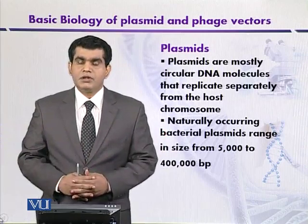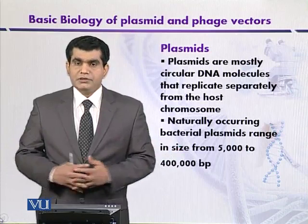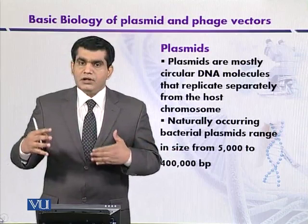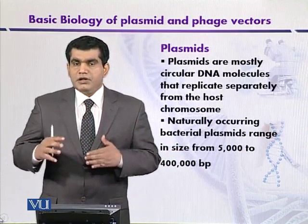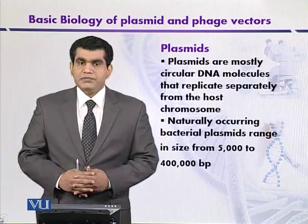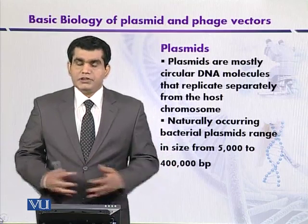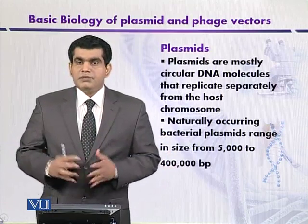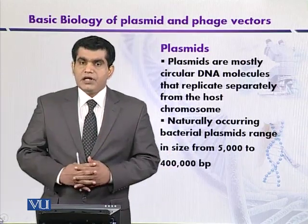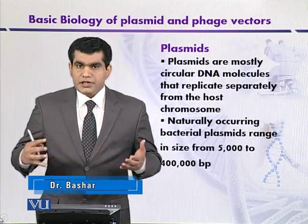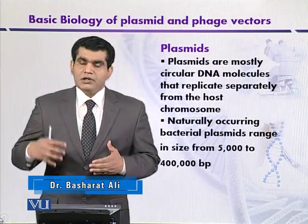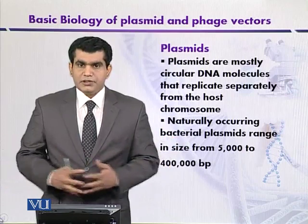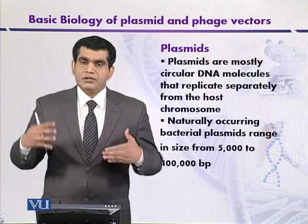Among the different types of vectors, bacterial plasmids are well known and they can deliver target DNA having a size of up to 15,000 base pairs or 15 kilobases. After plasmids, lambda phages have also been used to deliver target DNA, and they can transfer relatively larger DNA fragments compared to plasmids.